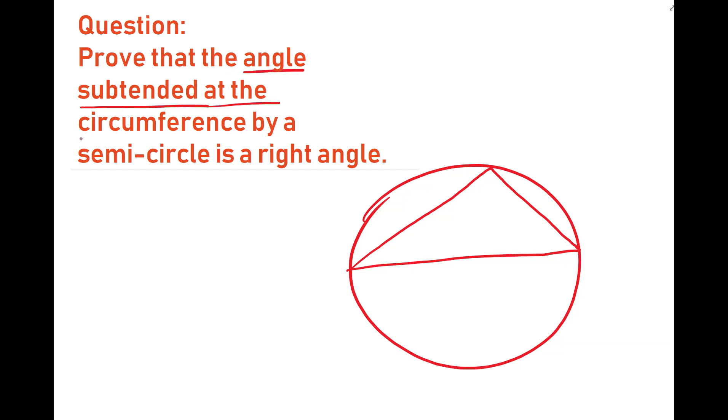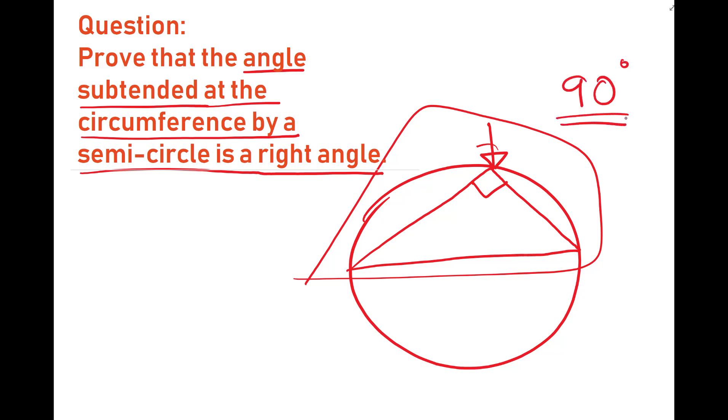So the angle subtended at the circumference is this angle here, and that's the semicircle, and we are proving that this angle is a right angle or 90 degrees.